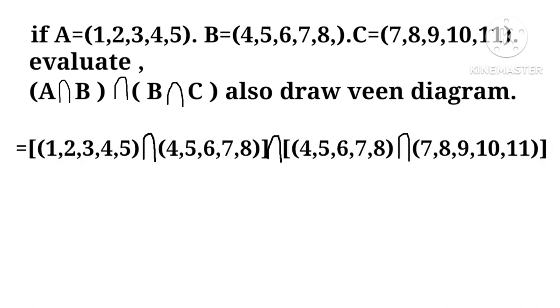Putting values for A, B, C, we see that this is 4, 5 and this is 7, 8. Now intersection of this is phi. Corresponding Venn diagram is shown.